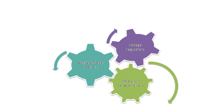There are essentially three ways to reduce inrush current: the use of voltage regulators, integrated load switches, and discrete components. Regardless of which technology you use, the goal of these methods is to increase voltage rise time, which in turn would reduce inrush current.